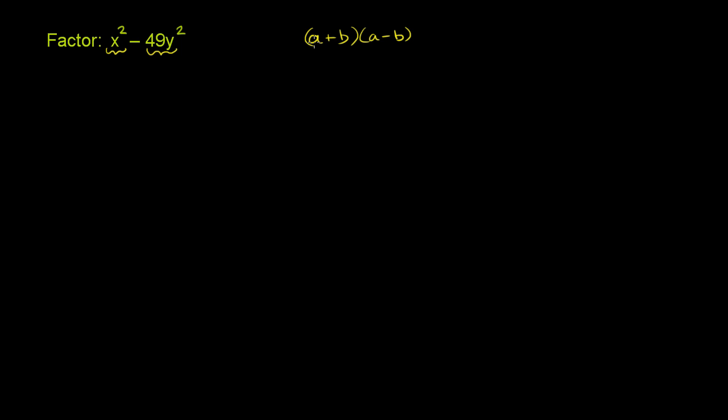So over here, this would be a times a, which would be a squared, plus a times negative b, which would be negative ab, plus b times a, or a times b again, which would be ab.